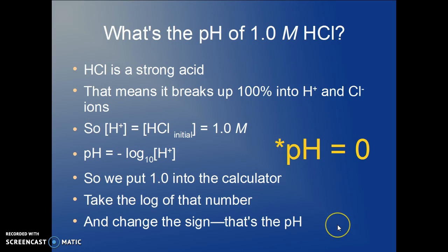And when you change the sign, of course, on the negative, you get a positive number. So the pH here is of concentration 10⁰. And that means the pH is zero.